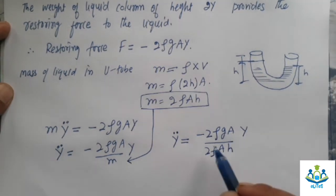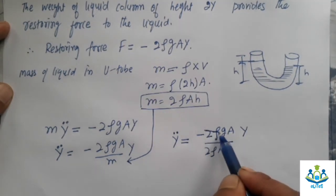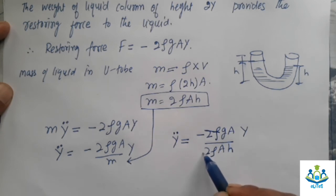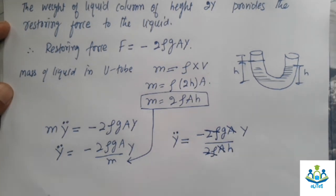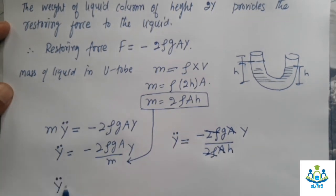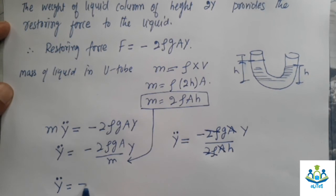You will see 2ρg, 2ρ and 2ρ will go. Area of cross section will go. Then we will have this: it will be -g over H times Y.